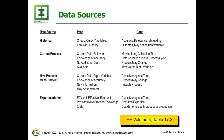In this particular slide, and also in Table 17.2 of Volume 3, I list some of the pros and cons of historical, current process, new process measurement, and experimentation. These are items that we need to keep in mind whenever we're collecting data.